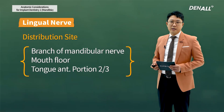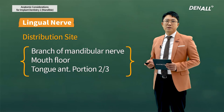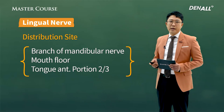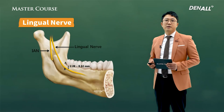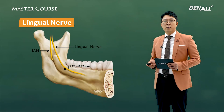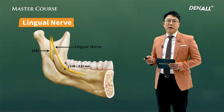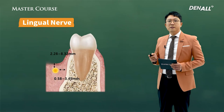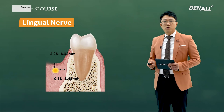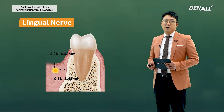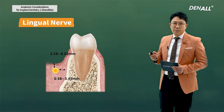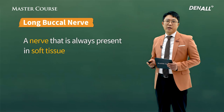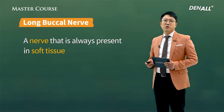Next, let's talk about the lingual nerve. The lingual nerve is the lingual branch of the mandibular nerve. It controls the sensation for the mouth floor and two-thirds of the tongue. The lingual nerve runs closest to the alveolar ridge at the lingual side of the third molar, and as it goes further to anterior, it moves away from the ridge. It is close to the lingual side of the ridge and also runs close horizontally.